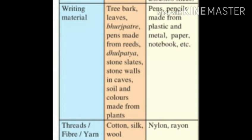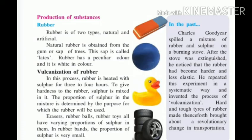Man-made writing materials include pen, pencil, and paper. Notebooks are also man-made. For thread, natural substances include cotton, silk, and wool; man-made thread includes nylon and rayon.